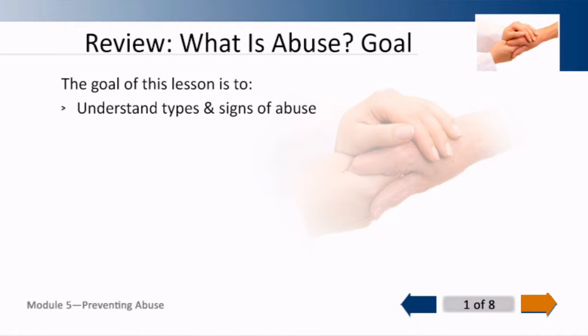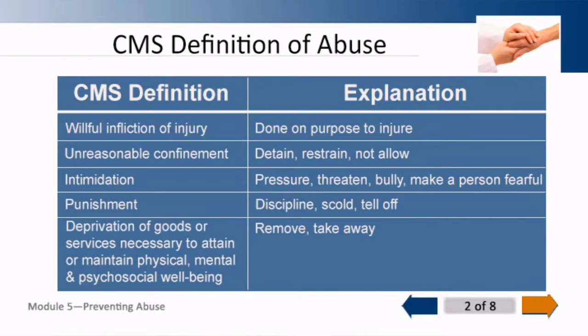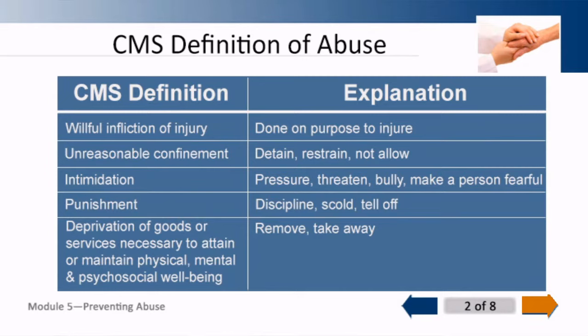The CMS definition of abuse is willful infliction of injury. There's intent involved here — you intend to hurt someone. It's done on purpose with intent to injure. Unreasonable confinement is to detain or restrain or not allow someone to do something that they want to do. Intimidation is pressure or threatening or bullying or making a person feel fearful. Sometimes you can be doing something with good intentions but it creates fear, and so you need to stop doing it if the person is safe. Punishment is discipline, scolding, telling them off. Deprivation of goods or services necessary to attain or maintain physical, mental, and psychosocial well-being means that you're going to take away or remove something that is of value to the elder.